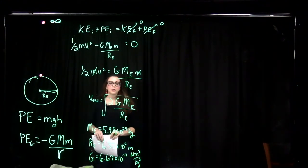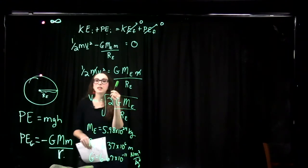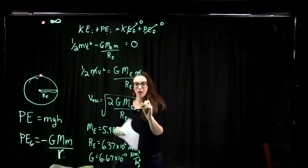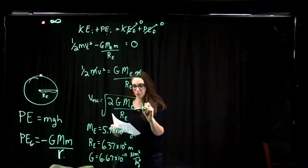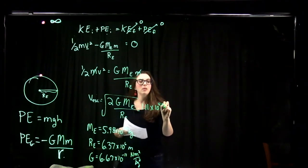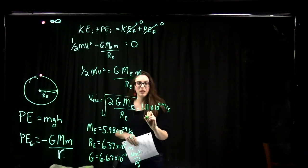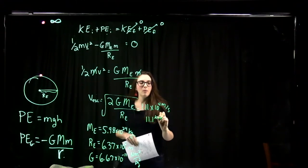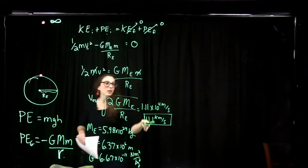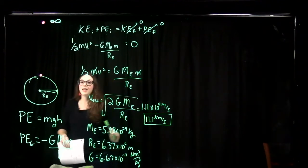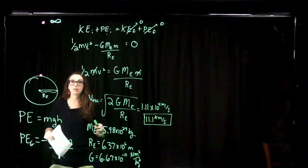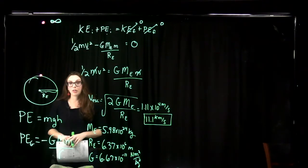Plugging in all these quantities, we find that the escape velocity for Earth equals 1.11 × 10⁴ meters per second, which is the same as 11.1 kilometers per second. You have to launch something off the Earth with this speed in order for it to escape the Earth's gravitational pull and not get locked in orbit.